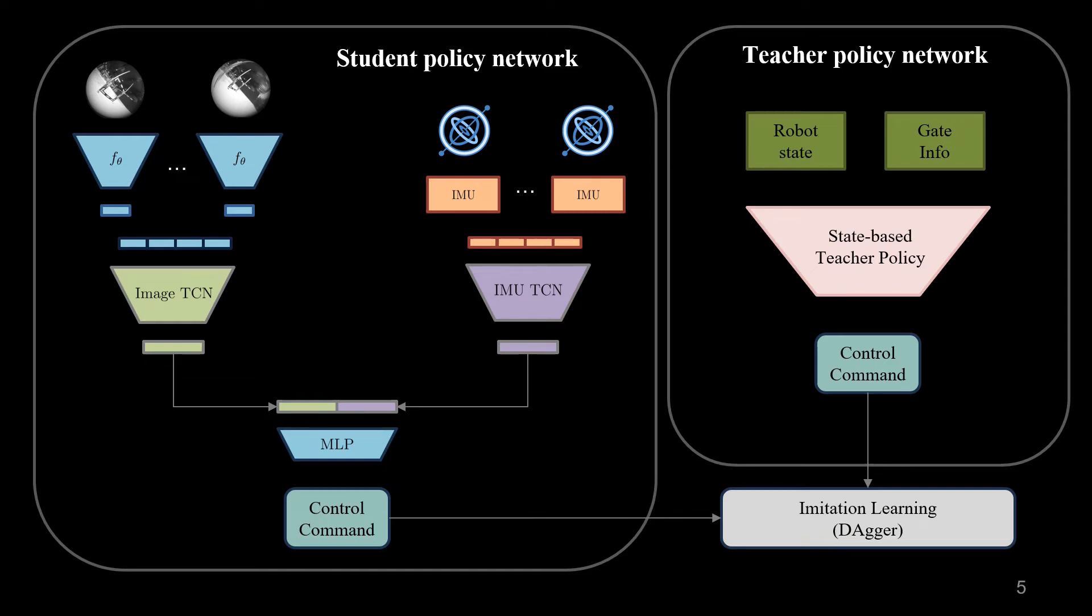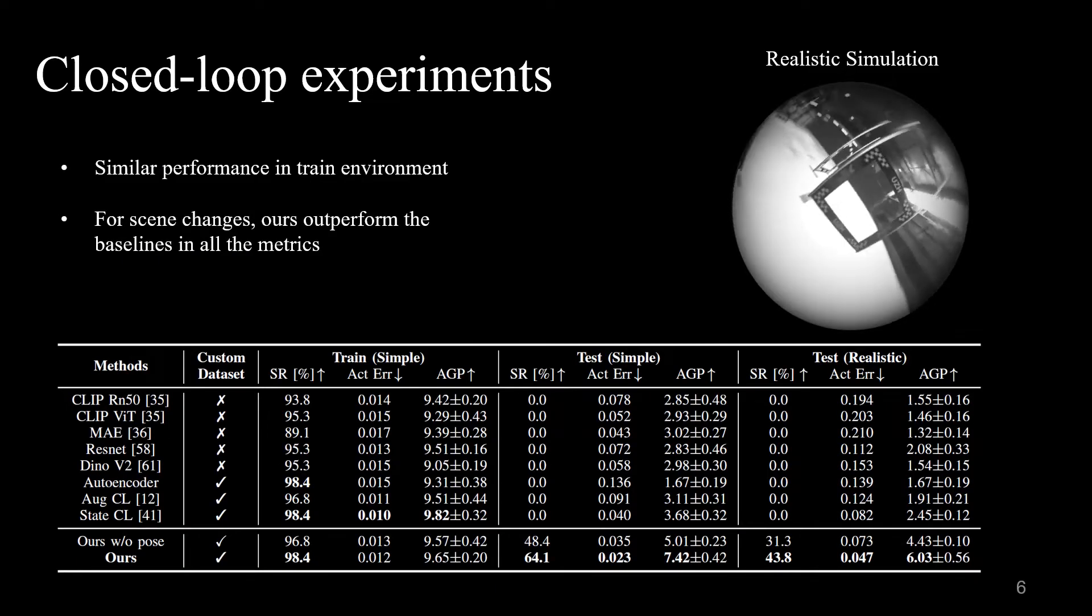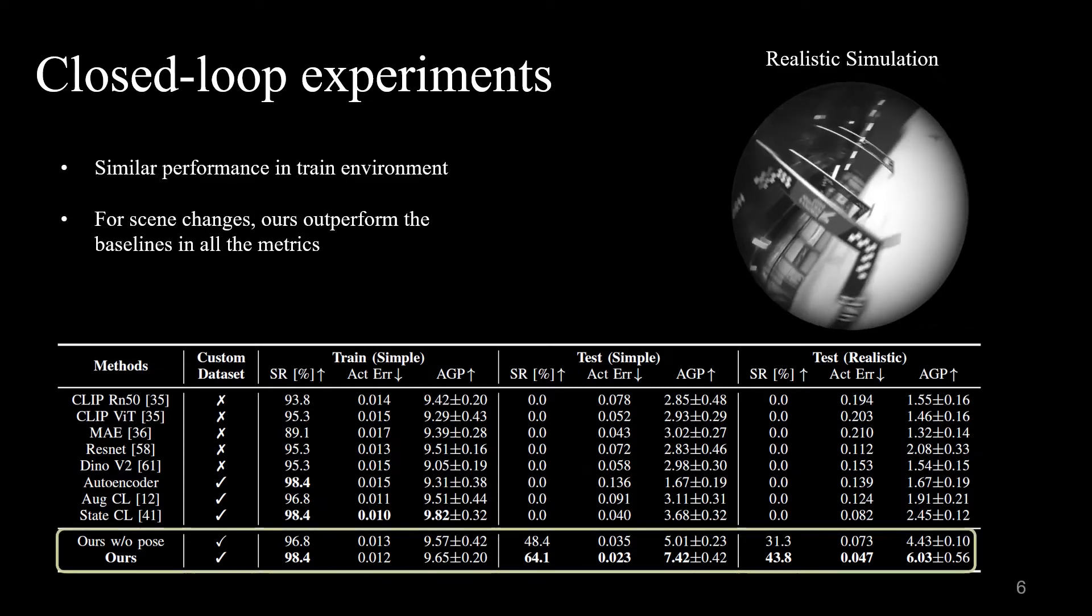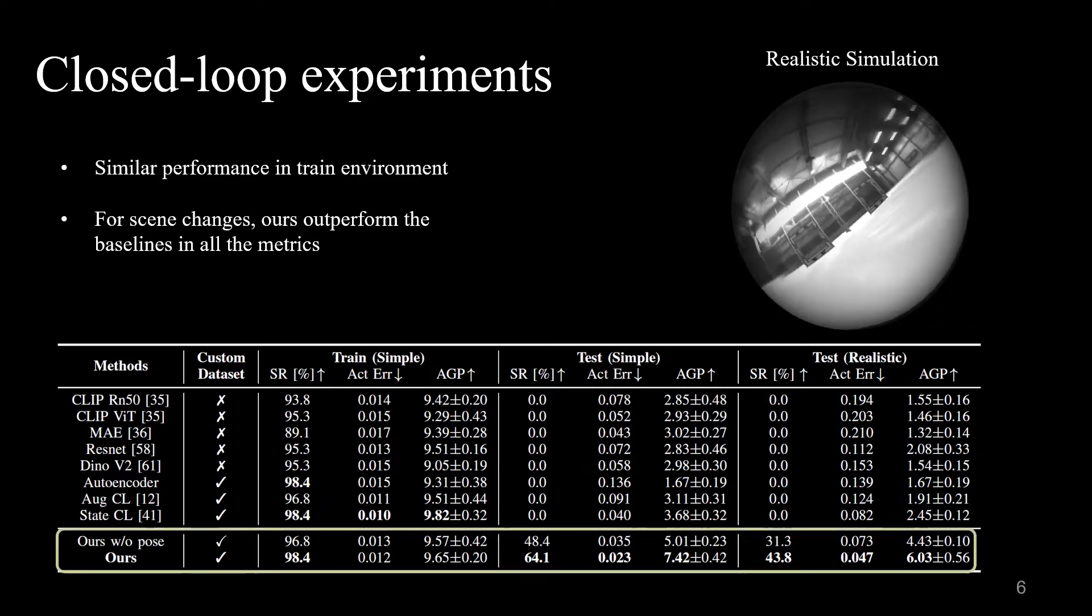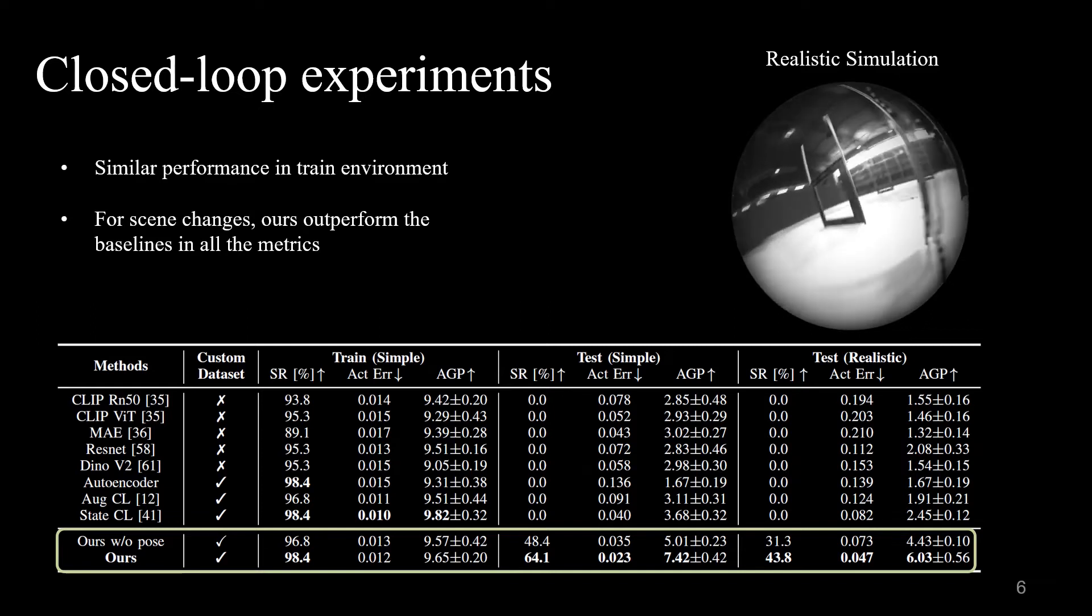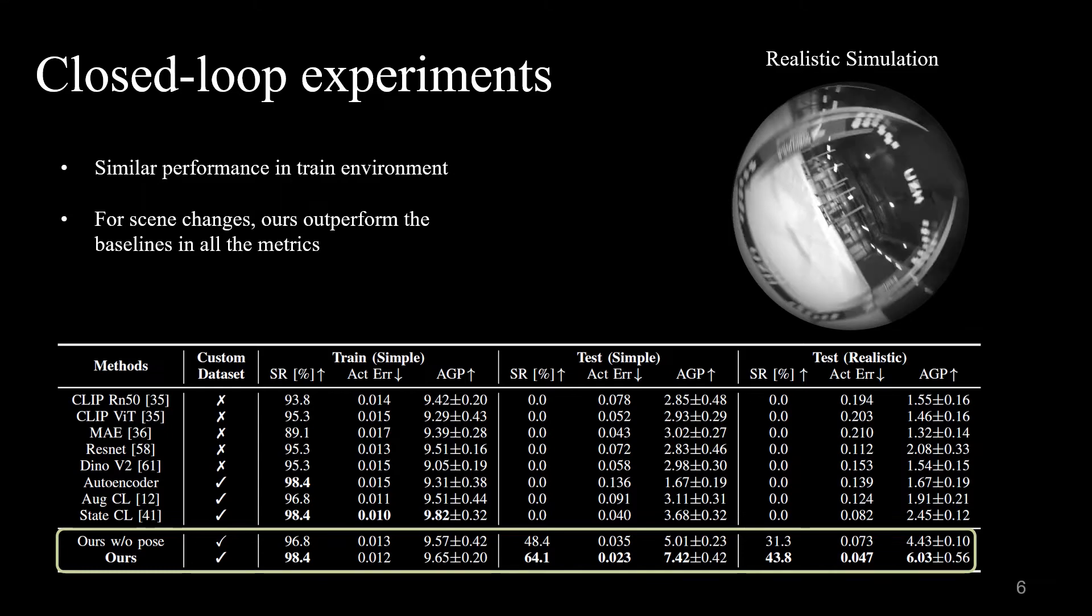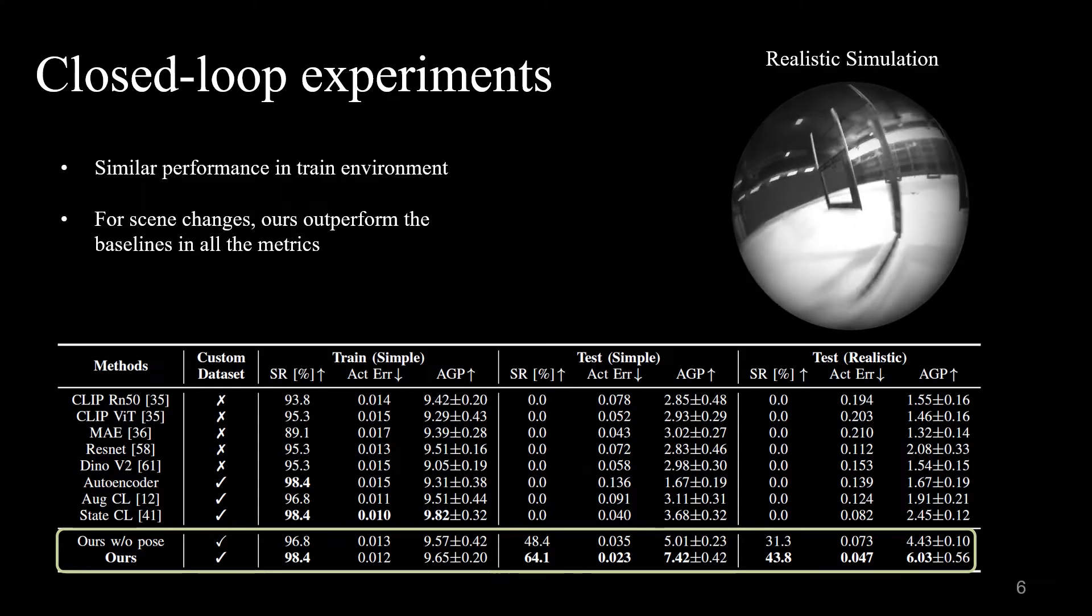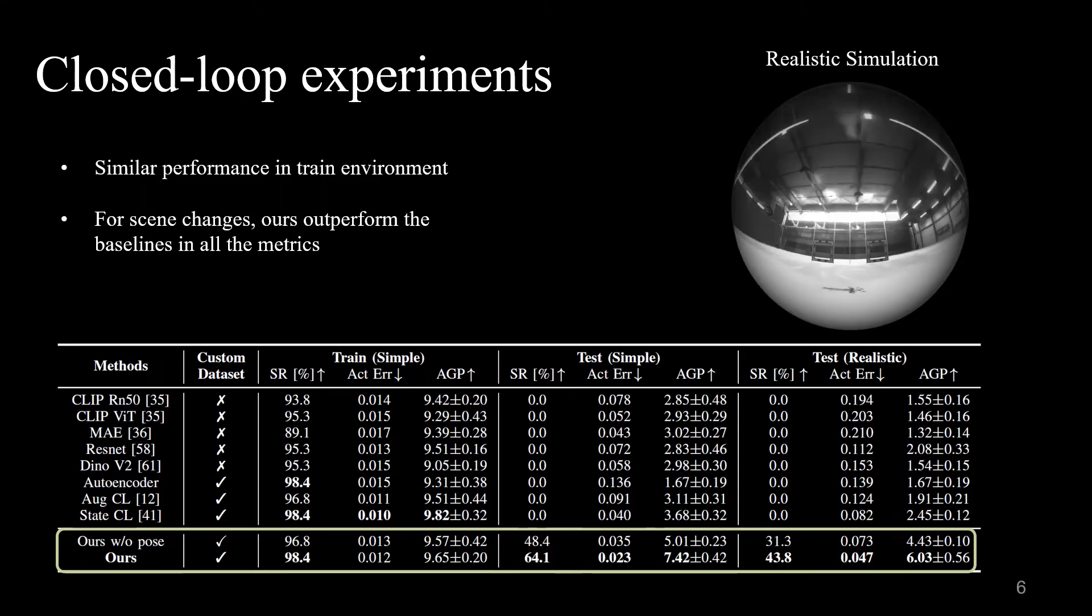We first perform a closed loop experiment in both seen and unseen environments for the policy network. We demonstrate that although the performance in the seen environments is similar when compared with the baselines, if we deploy the policy in a new environment, our method outperforms all the baselines by a large margin.